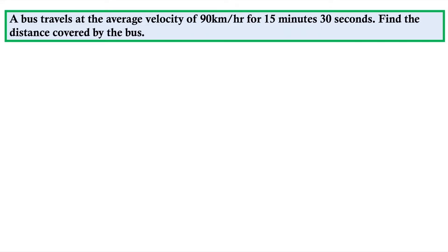If the bus is traveling at a speed of 90 km per hour for 15 minutes 30 seconds, find the distance covered by the bus. I will show you how to solve this question. Let's understand first - what is the speed? The speed or velocity given here is 90 km per hour.